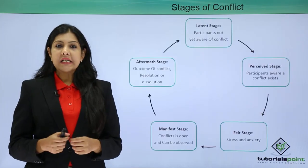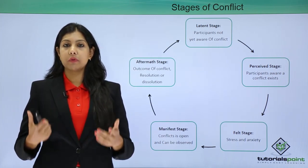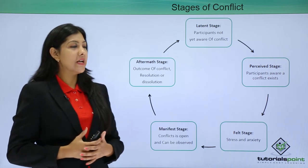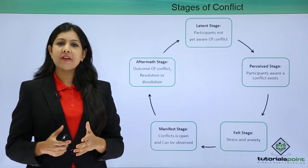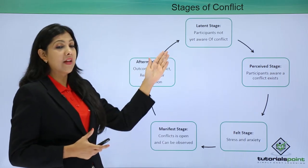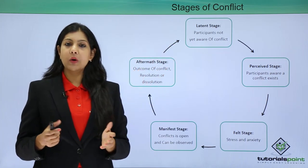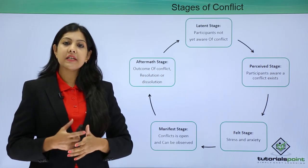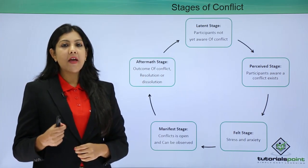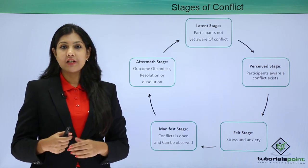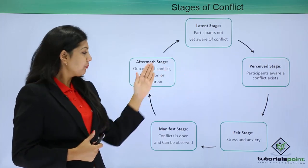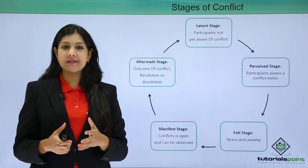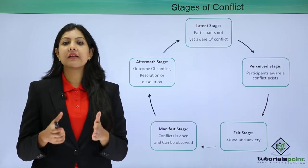Conflict goes through different stages. The first is the latent stage — a very nascent stage where people are not even aware that a conflict might arise. The second is the perceived stage, where people start to become aware that a conflict exists and awareness begins to form.